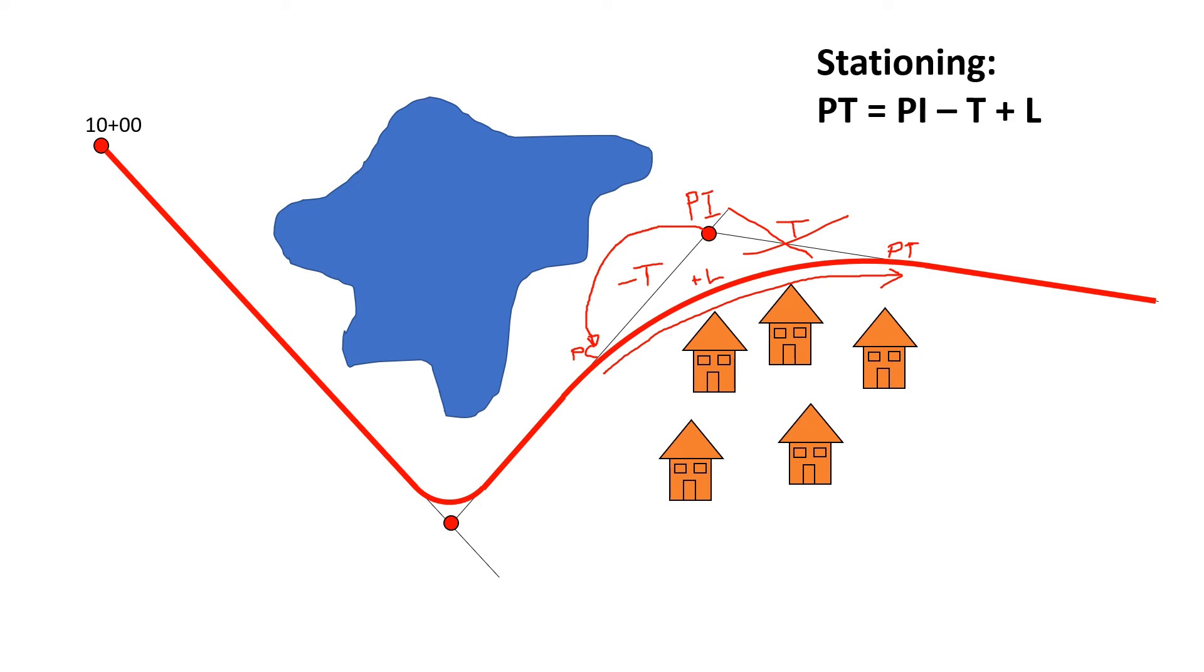Our equation, if we're looking for the PT station: the PT station is the PI minus T plus L. We will find that intermediate value of the PC station when we're doing this calculation as well: PI minus T equals the PC station.